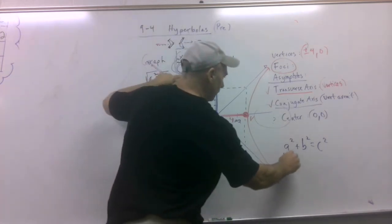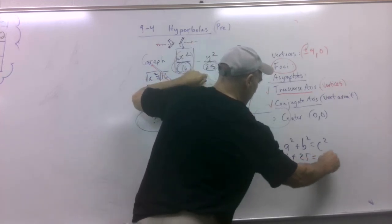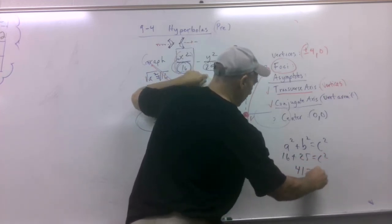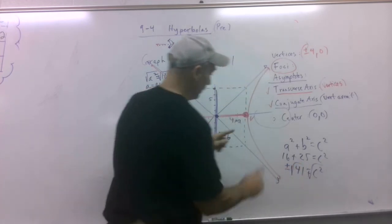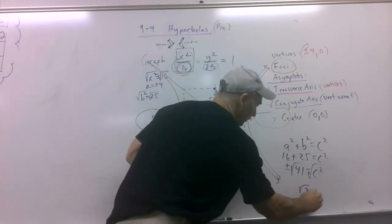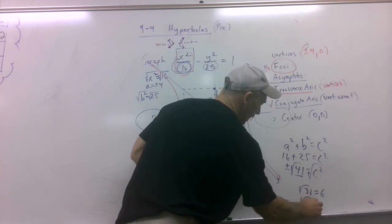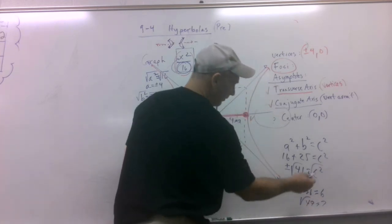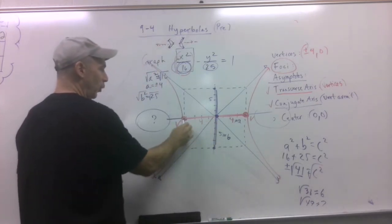But here we go. A squared is 16. B squared is 25. So I get 41 equals C squared. So I know that's a weird number. But let's talk about this. The square root of 36 is about what? It is 6. So what's this? Well, the square root of 49 is 7. So I'm going to say it's like 6.5. I know it's not perfect.